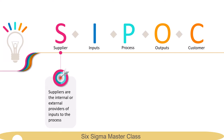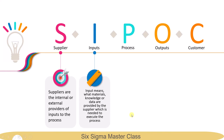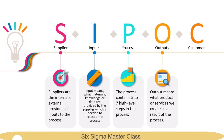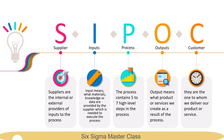Suppliers are the internal or external providers of inputs to the process. Inputs are the materials, knowledge, or data provided by the supplier that are needed to execute the process. The process contains five to seven high-level steps. Output means what product or service we create as a result of the process. And the customer is the one to whom we deliver our product or service.